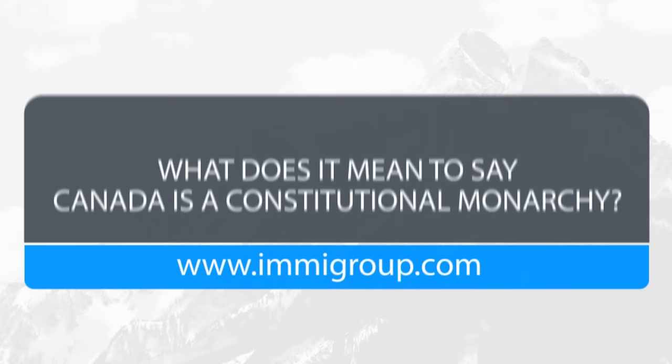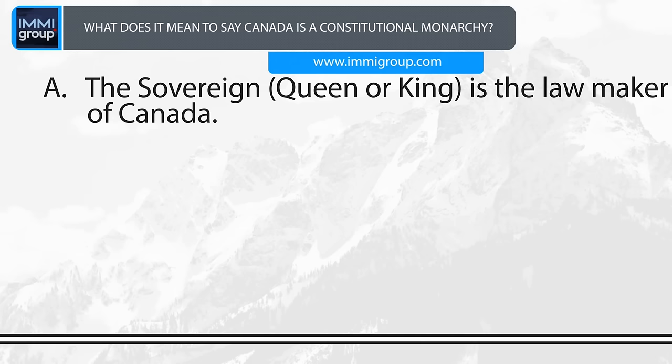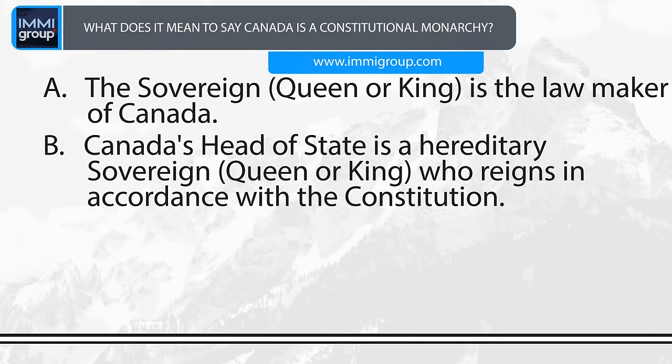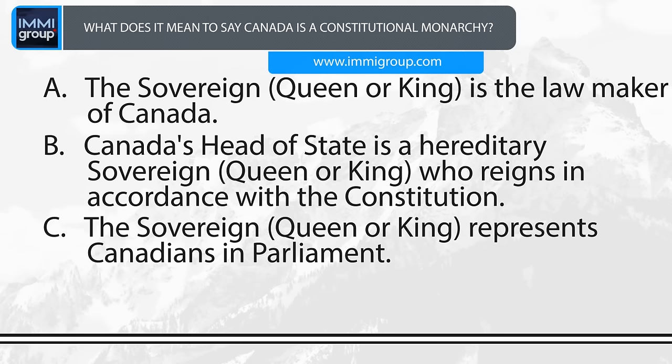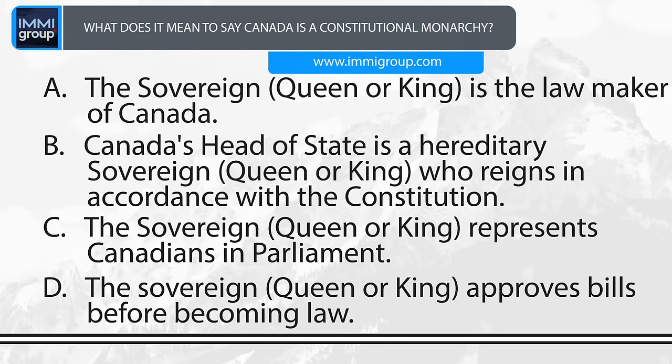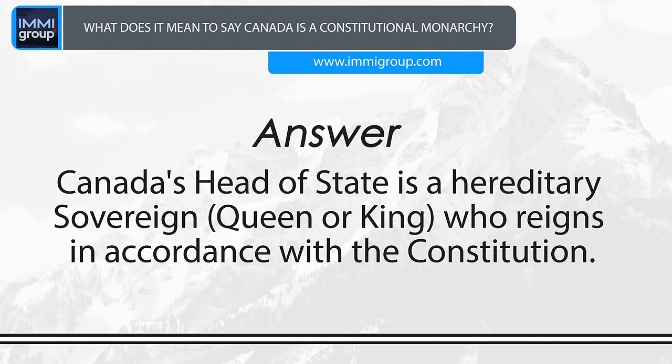What does it mean to say Canada is a constitutional monarchy? A. The sovereign, king or queen, is the lawmaker of Canada. B. Canada's head of state is the hereditary sovereign, queen or king, who reigns in accordance with the constitution. C. The sovereign, queen or king, represents Canadians in Parliament. D. The sovereign, queen or king, approves bills before becoming law. Answer: Canada's head of state is the hereditary sovereign, queen or king, who reigns in accordance with the constitution.